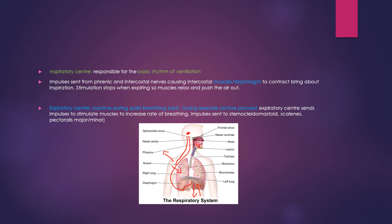The expiratory center is inactive during rest. At rest, impulses sent down the phrenic and intercostal nerves cause the diaphragm to move downwards and intercostal muscles to move outwards, bringing in air, and then they relax to gently force air out. The expiratory center only activates during exercise, when breathing is an active process. It sends impulses to stimulate the sternocleidomastoid, scalenes, and pectoralis major and minor muscles to help force air out of the lungs and speed up breathing rate.